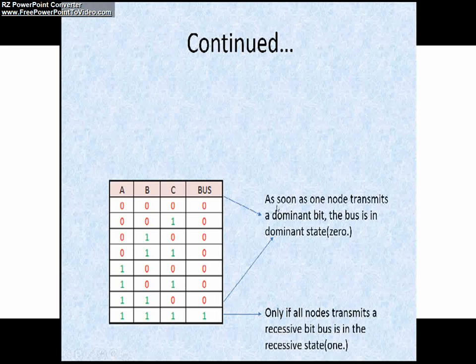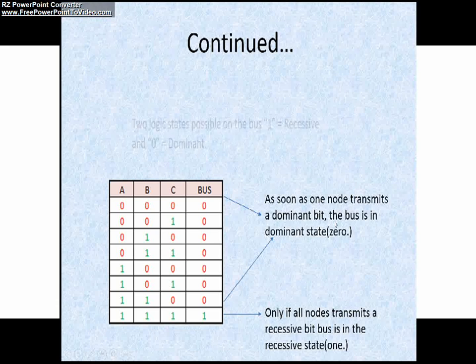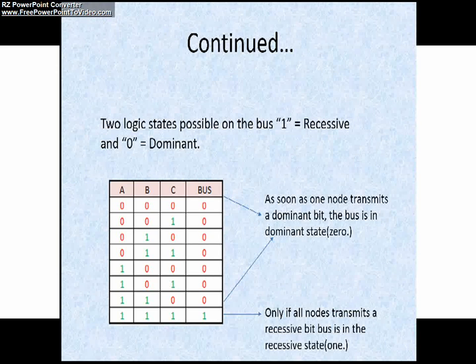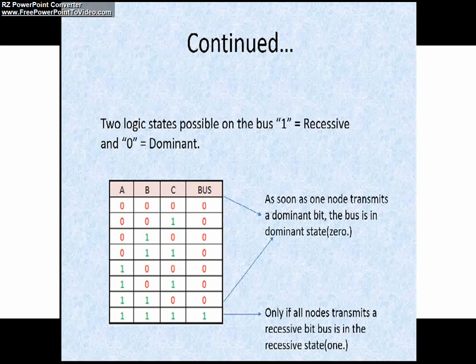You can see in this slide, I have written here: as soon as one node transmits a dominant bit, the bus is in a dominant state. So the conclusion is two logics are possible on the CAN bus: 1 equals recessive and 0 equals dominant.